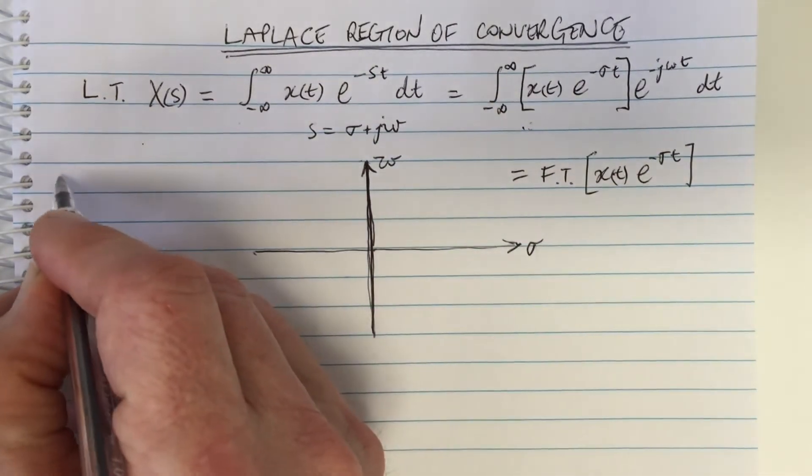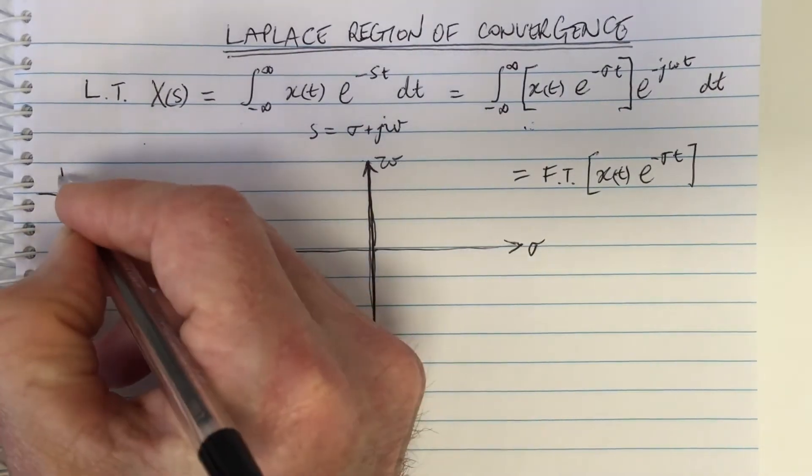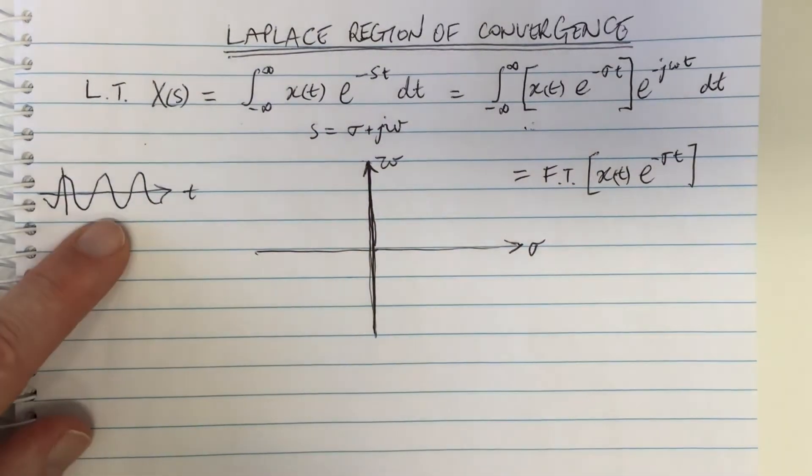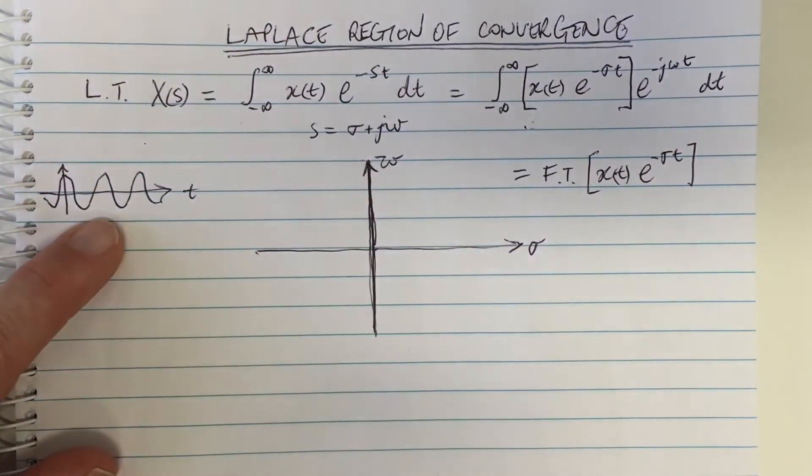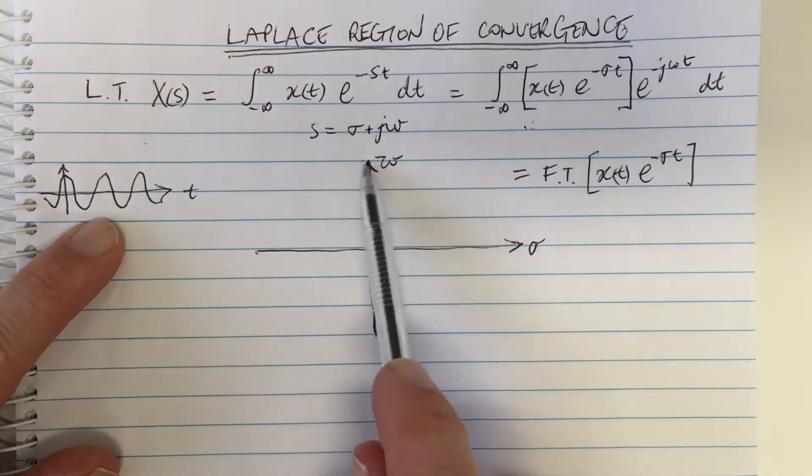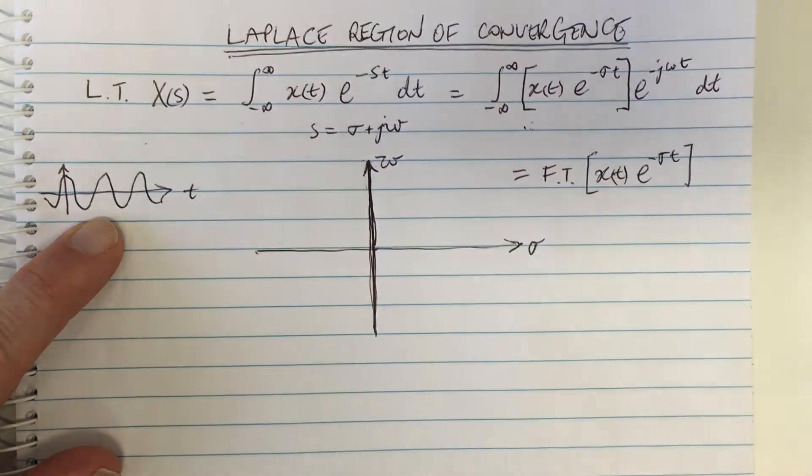Okay, so for example we think about some waveforms. So if we had for example in the time domain if we had a cos waveform in the time domain, if this was our x(t), then the Fourier transform exists in this plane, it exists along this axis here.